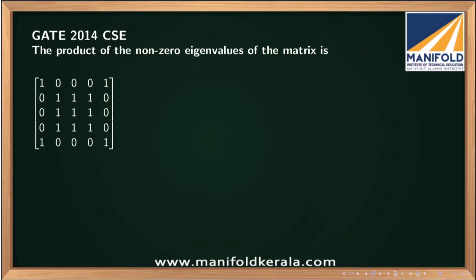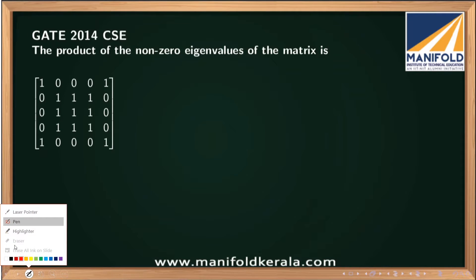We have a GATE question from computer science branch, asked in the year 2014. The question is: find the product of the non-zero eigenvalues of the matrix. The matrix is a 5×5 matrix: [1,0,0,0,1; 0,1,1,1,0] with the same rows repeated three times, and the last row [1,0,0,0,1].